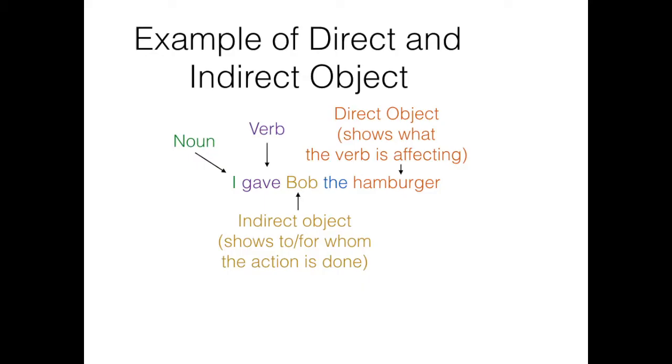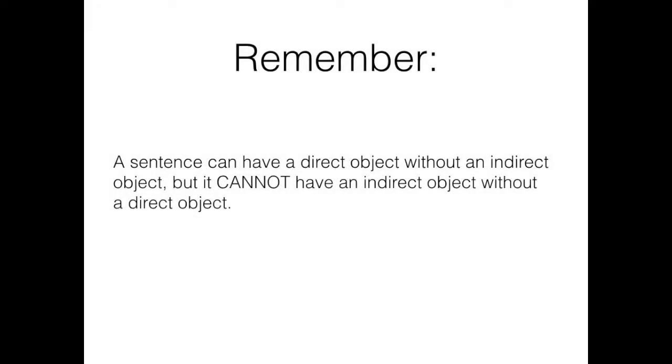It answers to whom or for whom the hamburger is given. The easy way to remember the difference when you're diagramming is that direct objects answer who or what the verb is being done to, and indirect objects answer to whom or for whom the verb is being done. Also, remember that you can't have an indirect object without a direct object, but you can have a direct object without an indirect object.